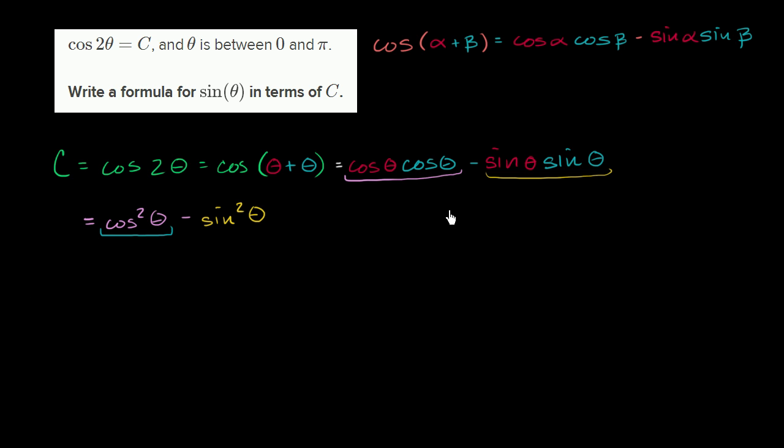Well, we already know from the Pythagorean identity that cosine squared theta plus sine squared theta is equal to 1. Or we could say that cosine squared theta is equal to 1 minus sine squared theta. So let me rewrite this as 1 minus sine squared theta, and then we have minus this yellow sine squared theta. And all of this is equal to c.